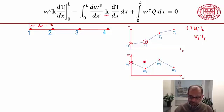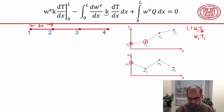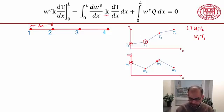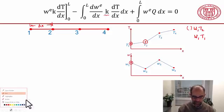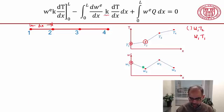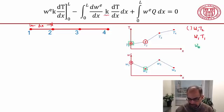Interestingly, when you go and do the integration over the second element, you won't get any terms involving w1. So those are the only two terms where you get w1 multiplying a nodal temperature. Then when we consider w2, when you do the integration over the first element you will get a term where w2 multiplies t1.